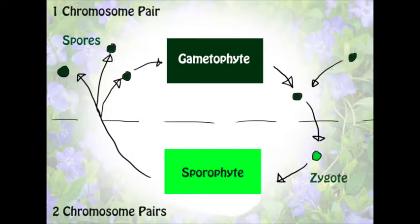The first part of their evolutionary history we need to understand is how they reproduce. Many modern plants we think of today reproduce using something known as seeds. Well, seedless plants don't really have that. So they reproduce using something known as alternation of generations. This complex life cycle starts with a gametophyte, which has one chromosome pair. A chromosome being a whole bunch of DNA, and DNA being sort of the blueprint that forms an organism — it determines what the organism will look like, its various characteristics, etc.